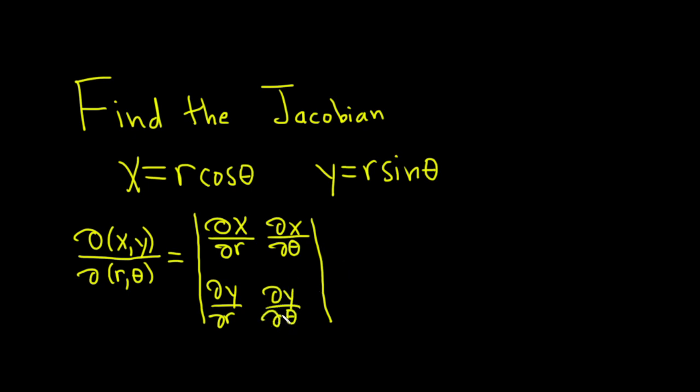And you can use this to compute the Jacobian. This is a determinant. So recall from matrix algebra, if you have a, b, c, d, it's just ad minus bc.